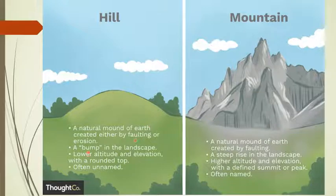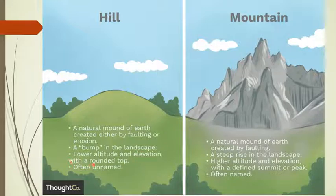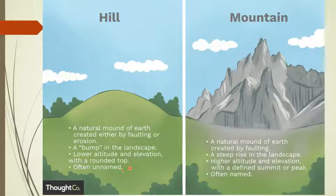The second property of hills is a bump in the landscape, with lower altitude and elevation, a rounded top, and often unnamed.